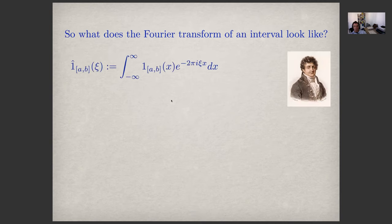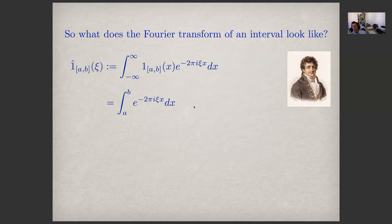By definition, we define the Fourier transform to be this integral over the whole real line, placing the indicator function of the interval inside the integral, multiplied against the complex exponential e to the minus 2πi x ξ dx. The good news is that you only need calculus one and two and a bit of infinite series to understand these integrals, because the measure is always over the real line — we're not doing complex integrals here.